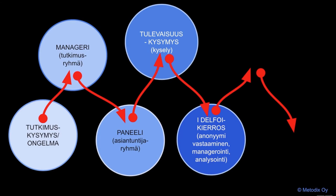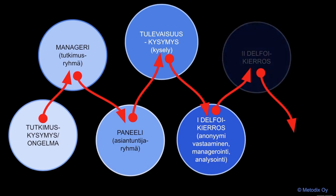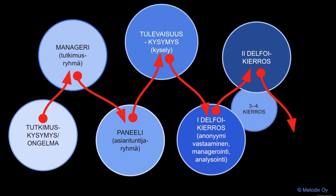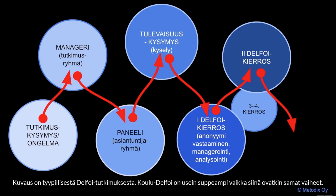Viime vuosina on lisääntynyt niin sanottu real-time Delphi, jossa kysymykset ja vastaukset ovat reaaliaikaisesti avoina koko kierroksen. Real-time Delphissä järjestetään vain yksi kierros. Useimmiten Delphoi kuitenkin toteutetaan 2–4 kierroksen prosessina, jossa joka kierroksessa managerit tuottavat uusia kysymyksiä, jotka nostetaan edellisen kierroksen kommenteista ja argumenteista – minkä takia kierrosten välillä on muutaman päivän tai viikonmittainen väli, jotta managerit ehtivät analysoida tuloksia.